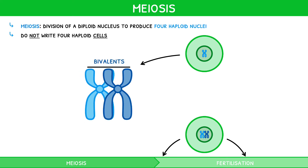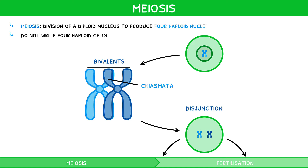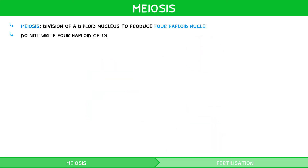These bivalents are held together with structures called chiasmata. During the process of meiosis, these bivalents then separate, known as disjunction.